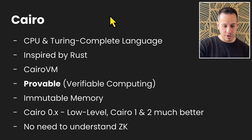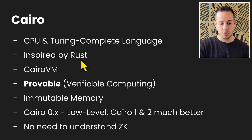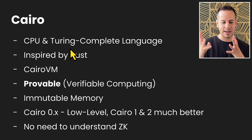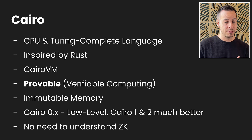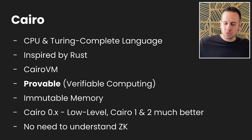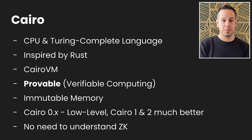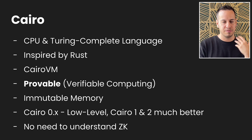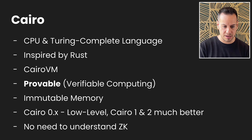Cairo is a CPU and Turing-complete language, inspired by Rust. Cairo 1 and Cairo 2, the most recent versions, look very similar to Rust. If you have some experience with Rust, it will be easier for you. But if you don't know Rust at all, you will learn everything here from scratch and get used to the syntax very easily if you follow these chapters along in the exercises.